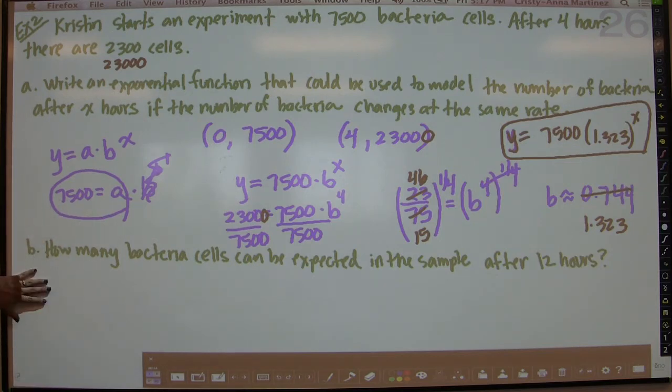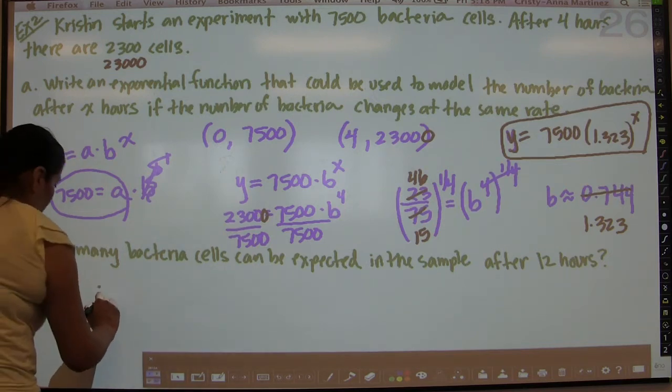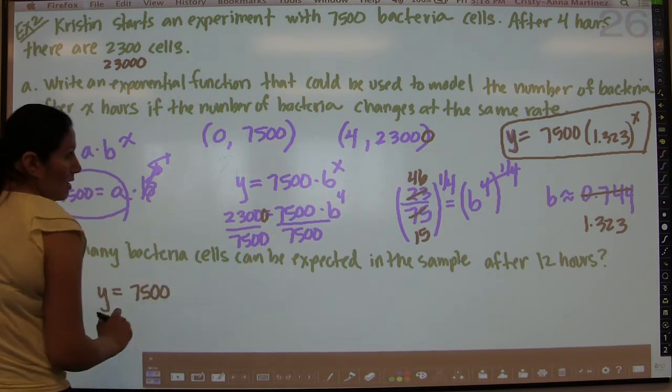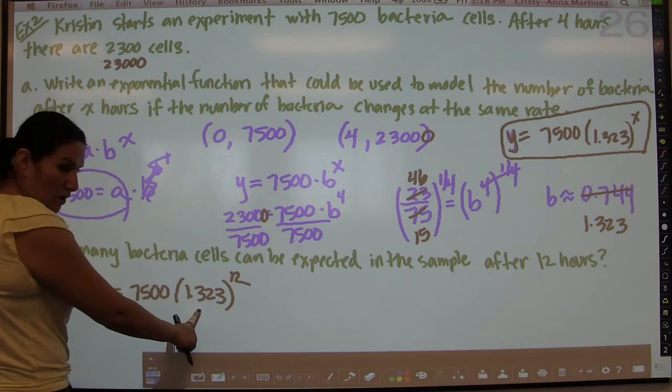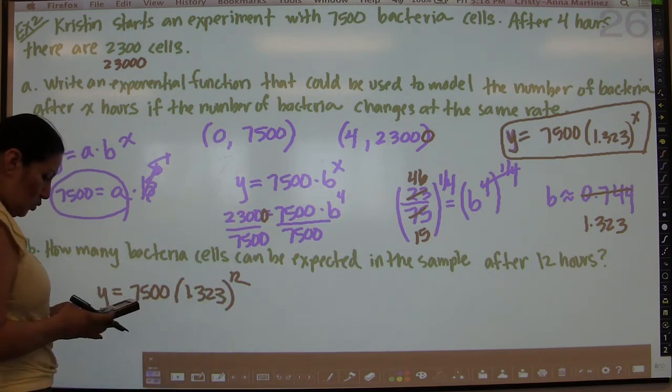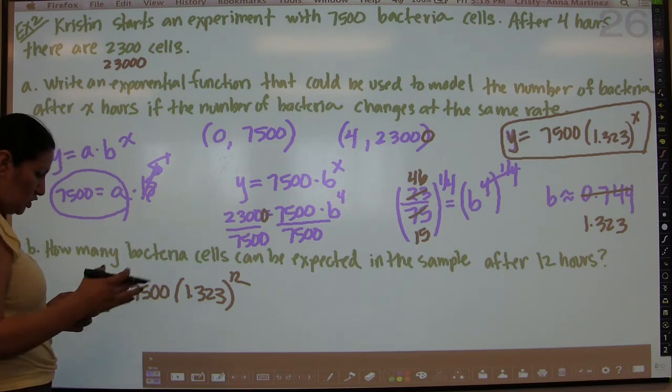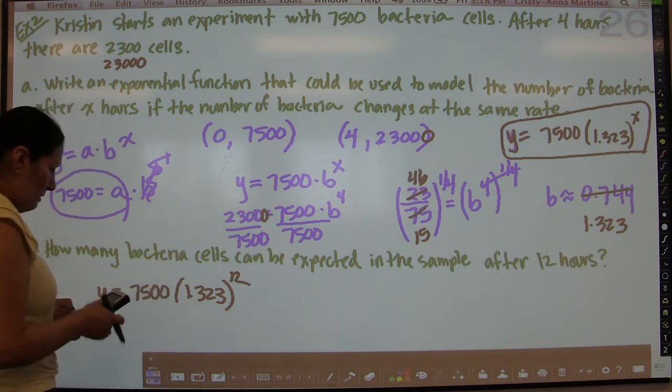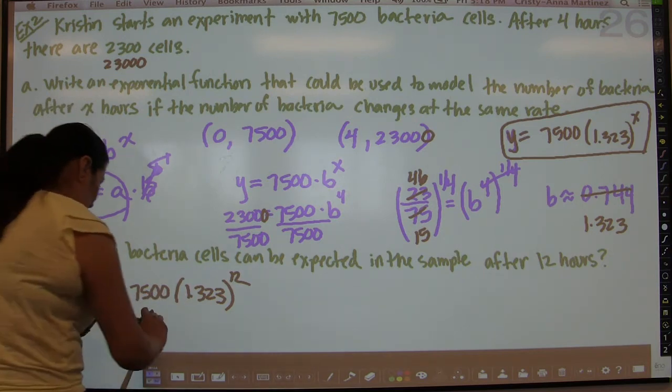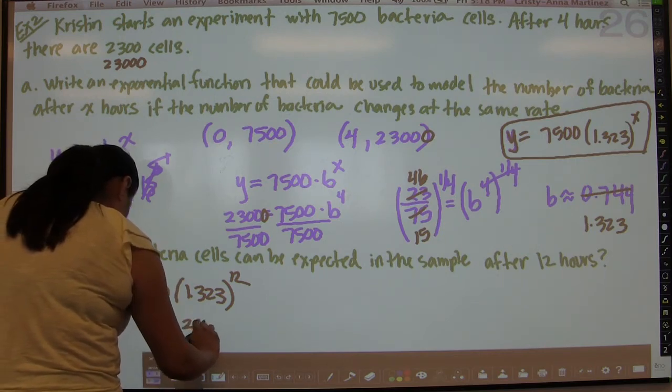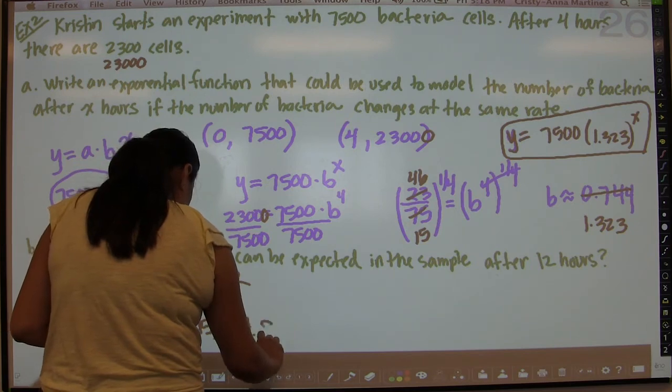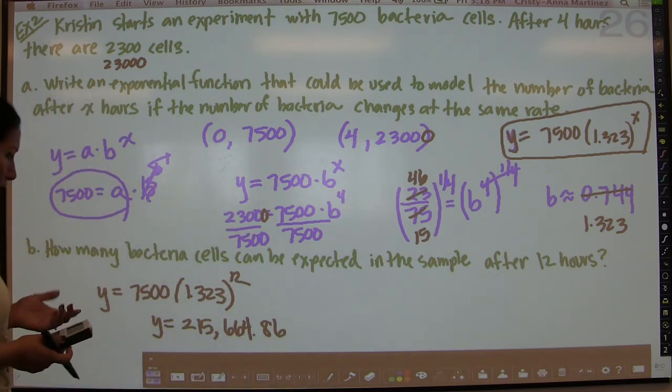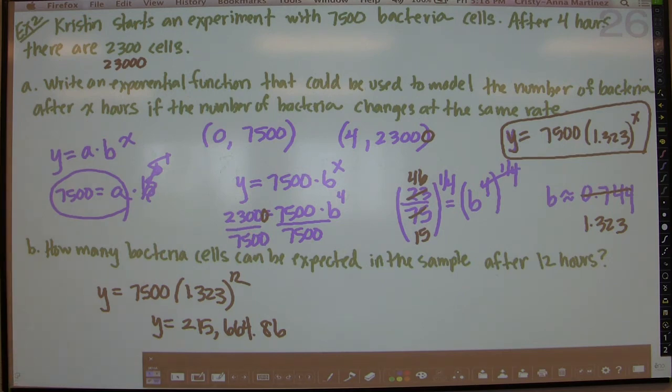And now we can actually use that equation to do part b. How many bacteria cells can be expected in the sample after 12 hours? All we have to do now is replace x with 12. So y is going to equal 7,500 times 1.323 to the 12th power. Remember, we have to do order of operations. Do not take 7,500 times 1.323. You want to raise 1.323 to the 12th power first, which is 28.7553. And then times that by 7,500, and you will get that after 12 hours you will have 215,664.86 cells, or basically 215,665.